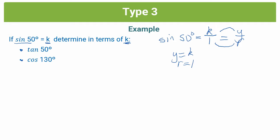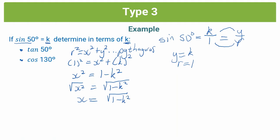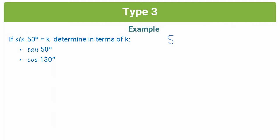Now we can use Pythagoras to solve for x: r squared equals x squared plus y squared. So 1 squared equals x squared plus k squared, meaning x squared is 1 minus k squared. Square rooting both sides gives x equals root(1 minus k squared). We take the positive value because sine 50 lies in the first quadrant where both x and y are positive. So for 50 degrees: x is root(1 minus k squared), y is positive k, and r is positive 1.